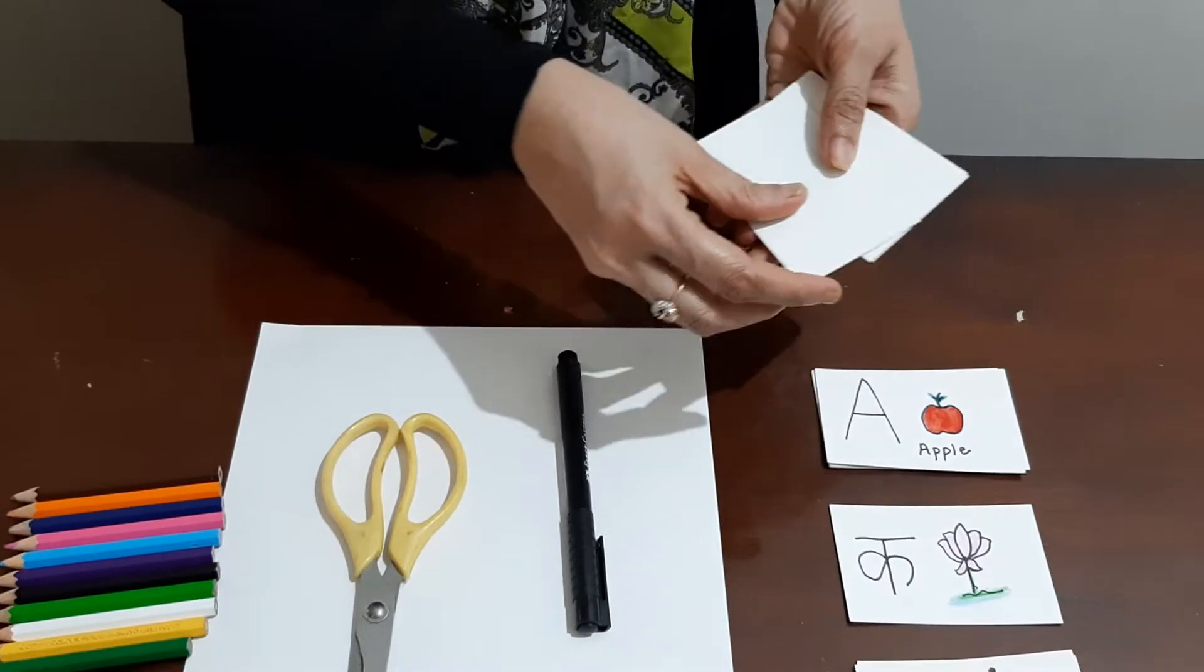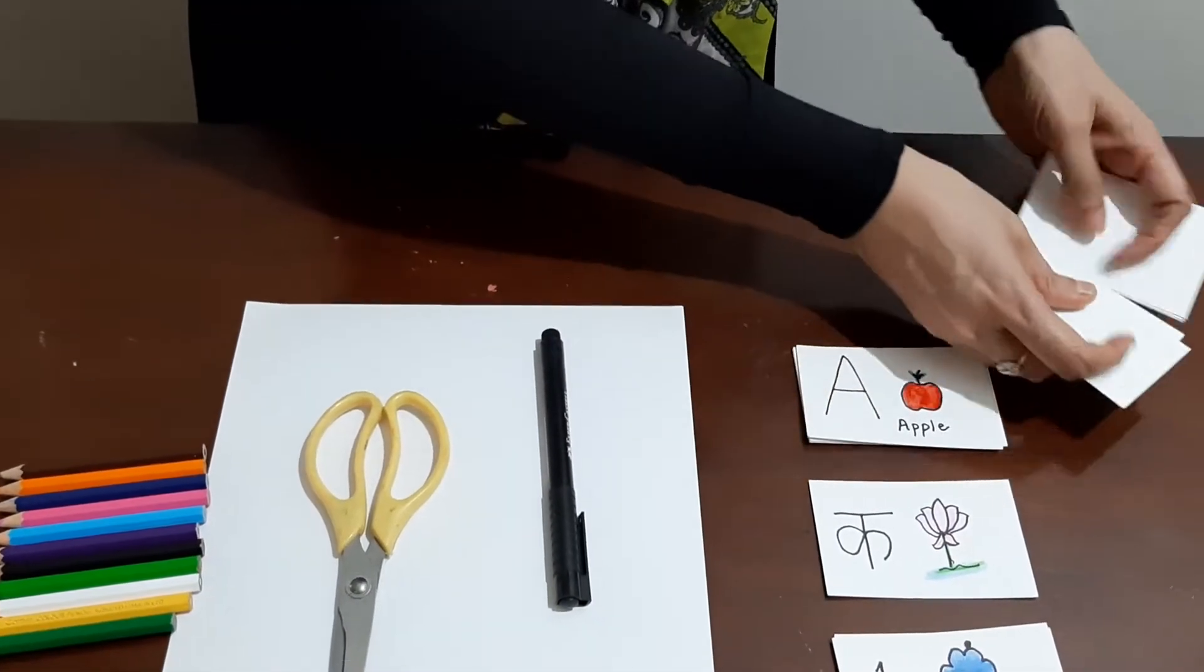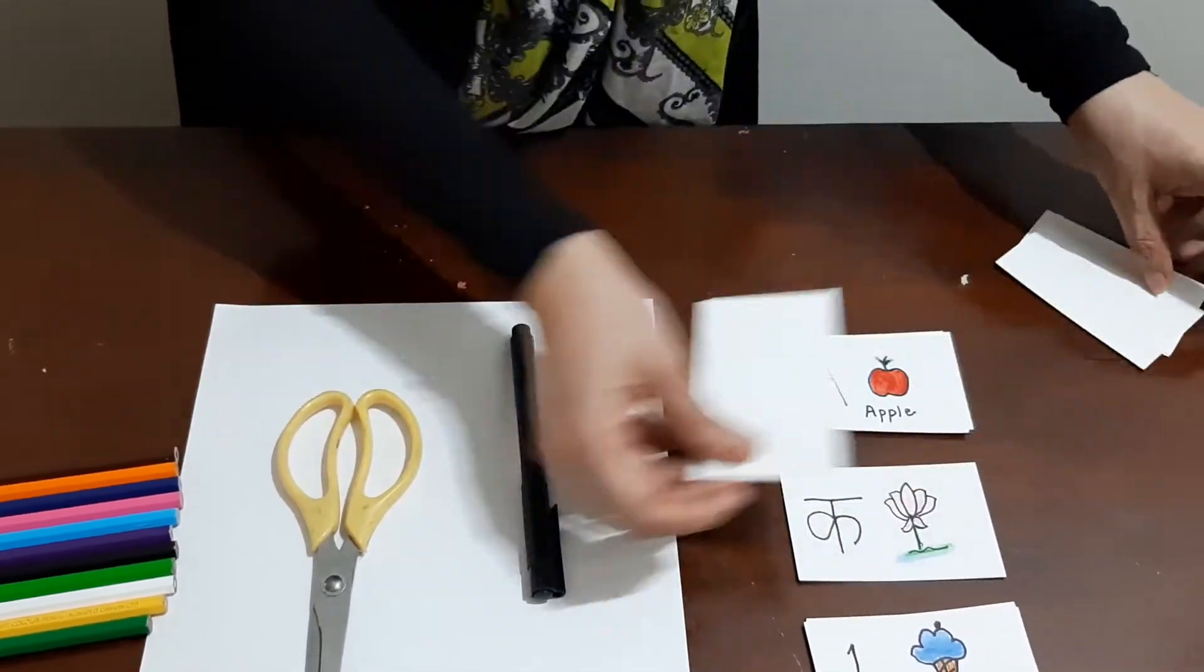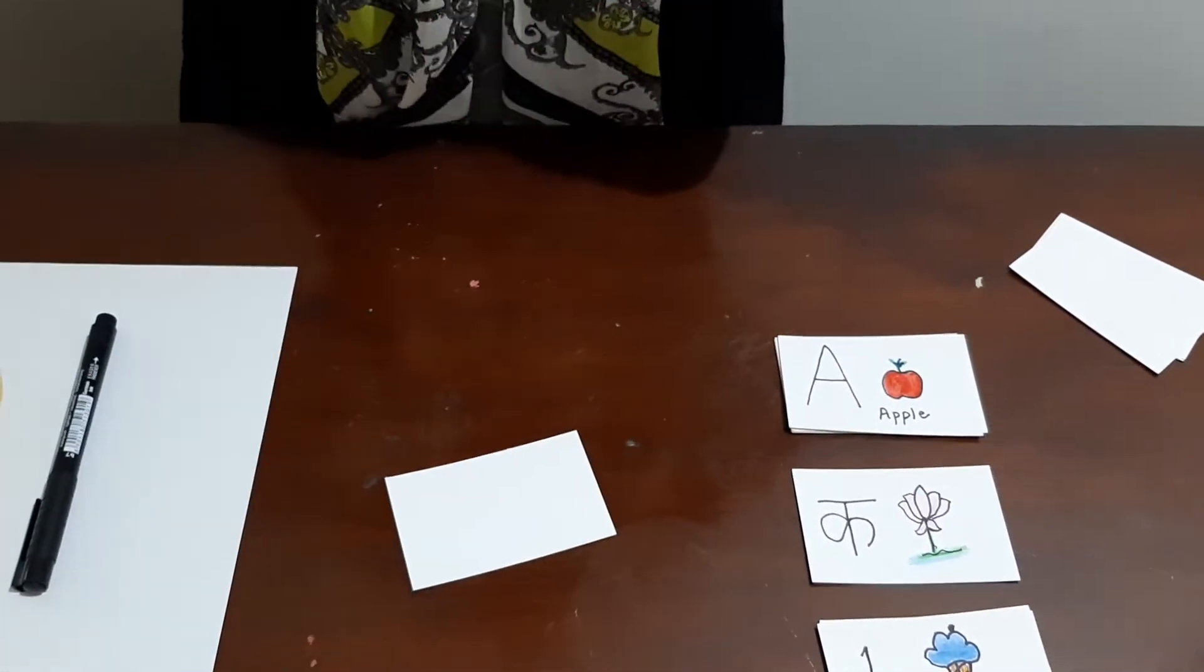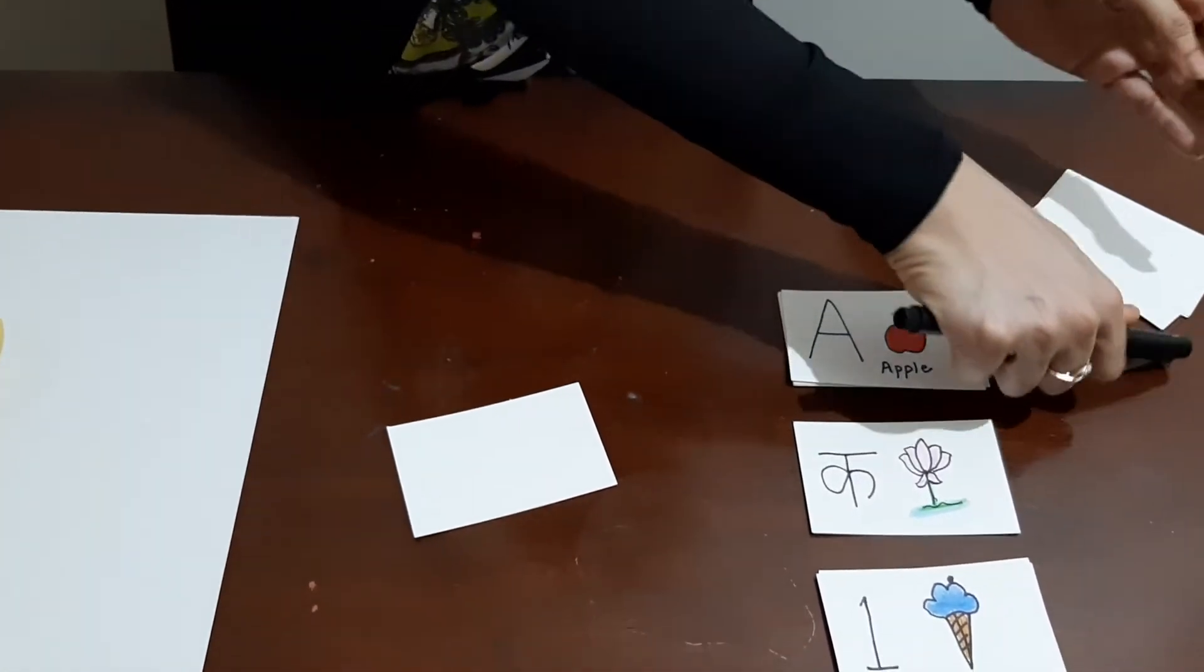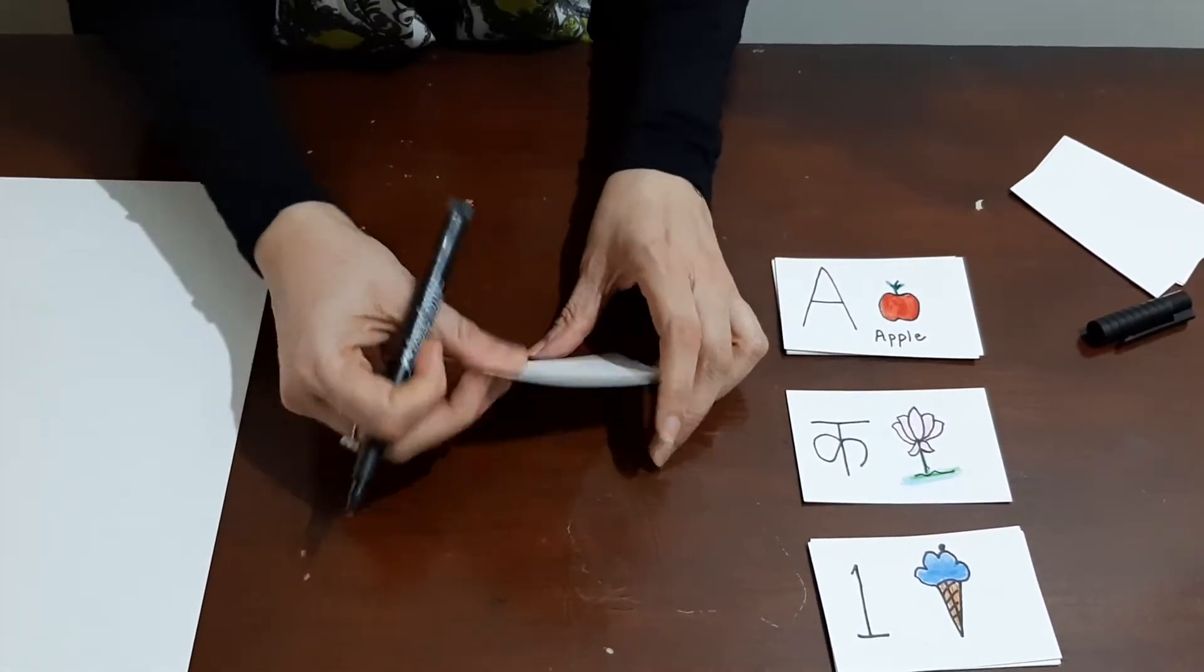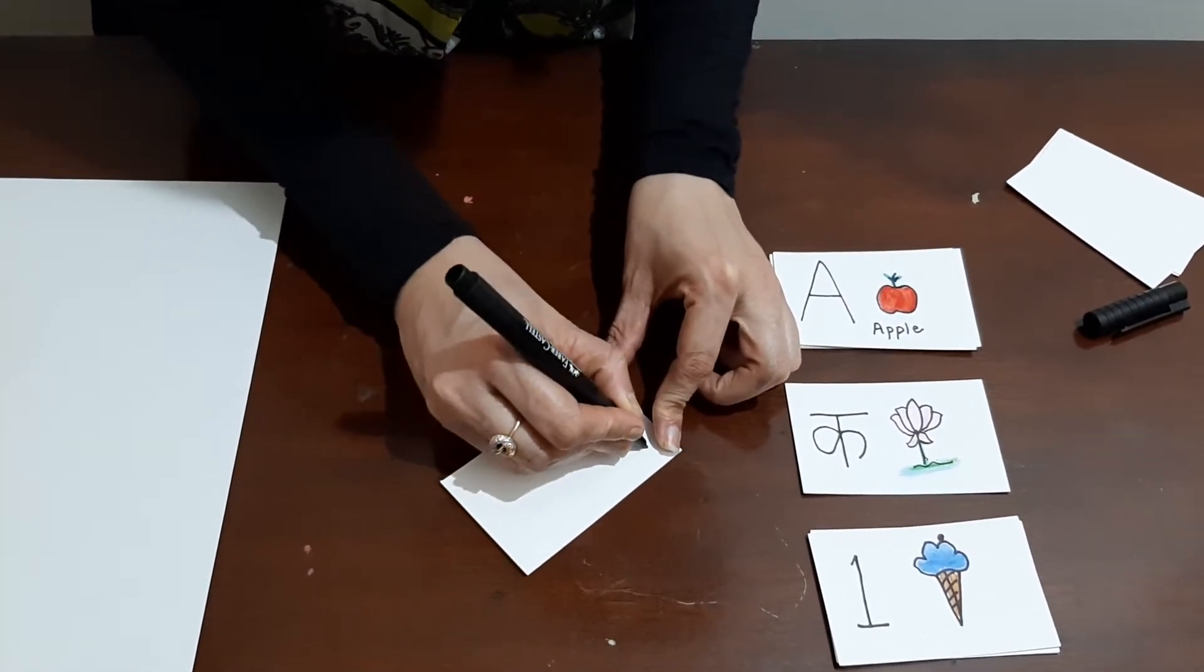Now, after cutting them, take one flashcard and write the alphabet. Any alphabet, say F. So what I am doing is writing F.